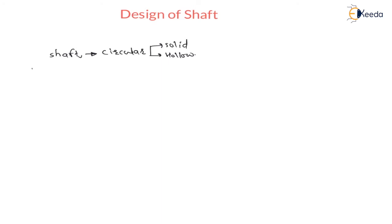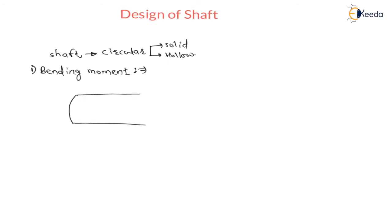First we are going to see about bending stresses, that is bending moment. Whenever a shaft is subjected to only bending moment, consider a shaft having circular cross section. For this shaft having circular cross section, there will be an axis passing exactly through the center line — this is the axis of the shaft.